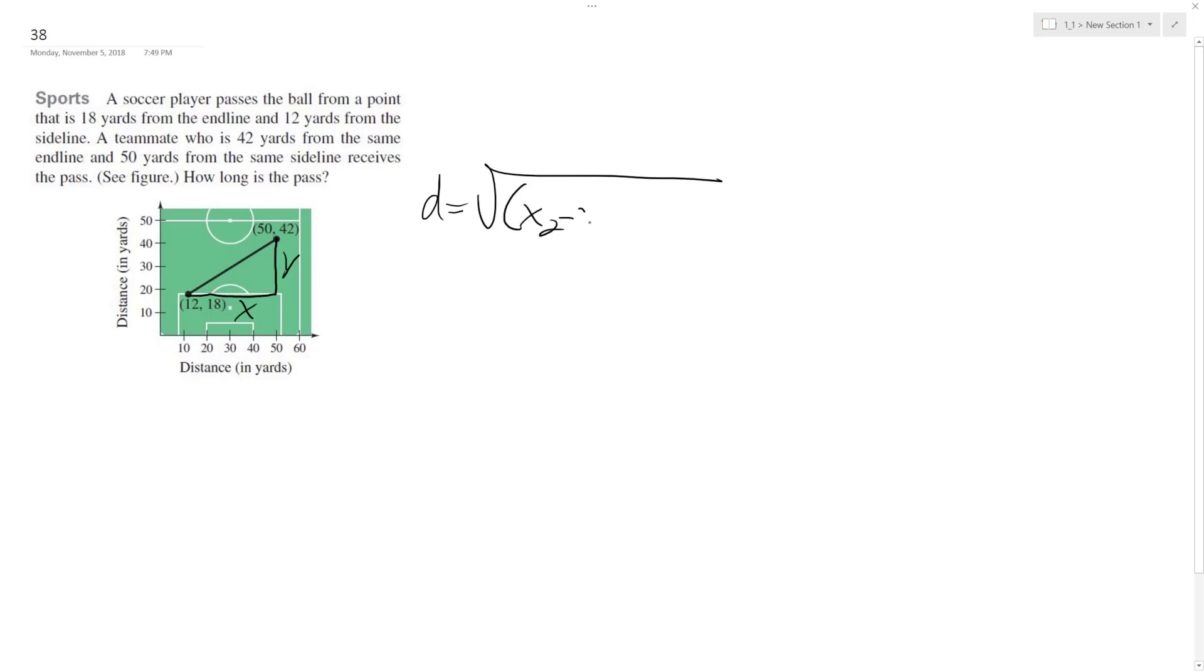Quantity x2 minus x1 squared plus y2 minus y1 squared. So what we do here is we just label them, so 12, 18, and then 50 and 42. So we call this x1, y1, x2, y2.